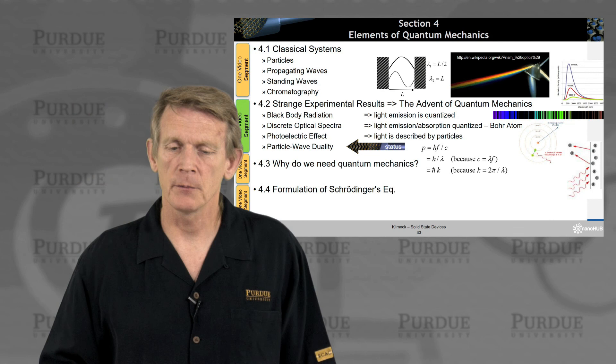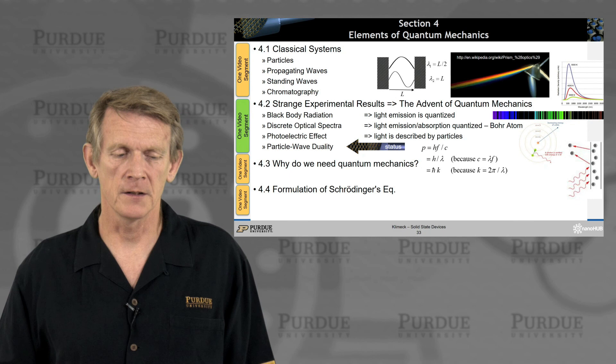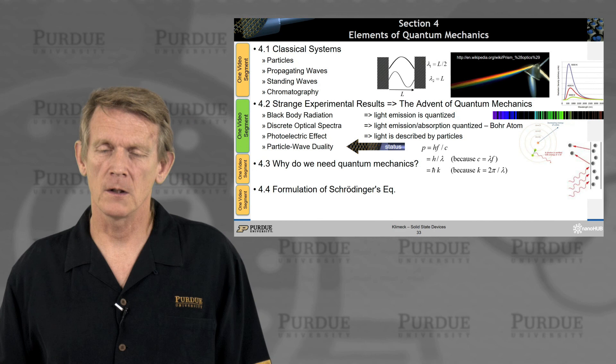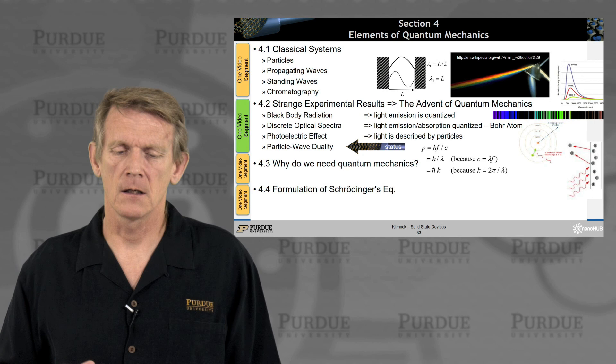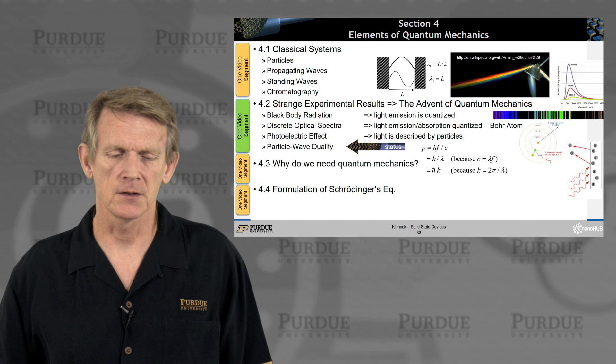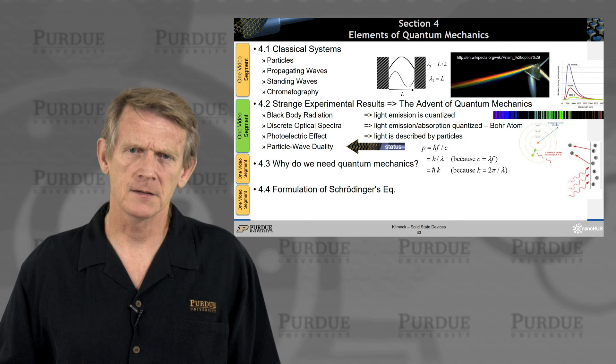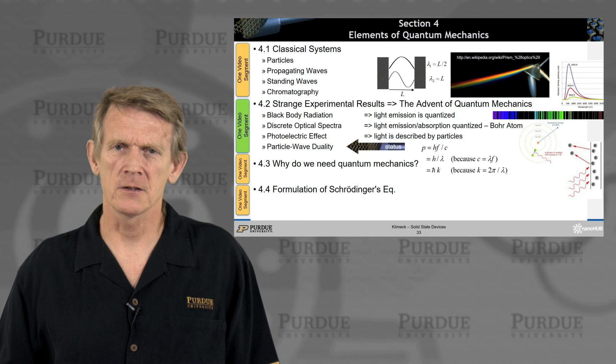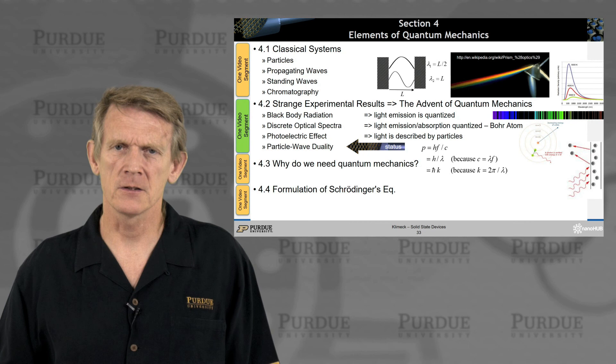All right. So we talked about all these strange experimental results. Black body radiation, meaning light emission is quantized, discrete optical spectra, light emission and absorption is quantized, the advent of the Bohr atom. And the photoelectric effect really honed in on light being described by particles. And then ultimately, the particle wave duality as being useful for describing physical systems. So all of these experimental results and concepts really guided the community, the researchers, into the creation of quantum mechanics. And in the next section, I'll highlight again a little bit why we would care and what we would get out of it for learning about the quantum mechanical foundations. Thank you.